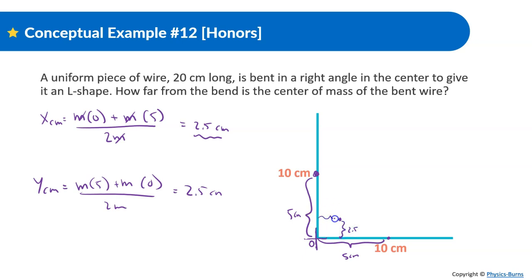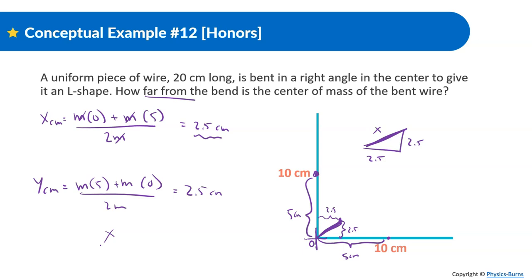The center of mass is at (2.5, 2.5) centimeters, but the question asks how far from the bend that point is — so we need the straight-line distance using the Pythagorean theorem: √(2.5² + 2.5²) = √(6.25 + 6.25) = √12.5 ≈ 3.54 centimeters. So the center of mass is 3.54 centimeters from the bend. Hope that was helpful — good luck, and thanks for watching!